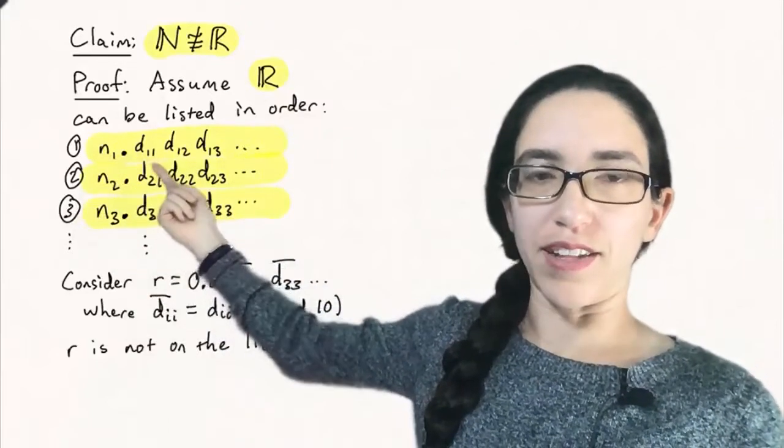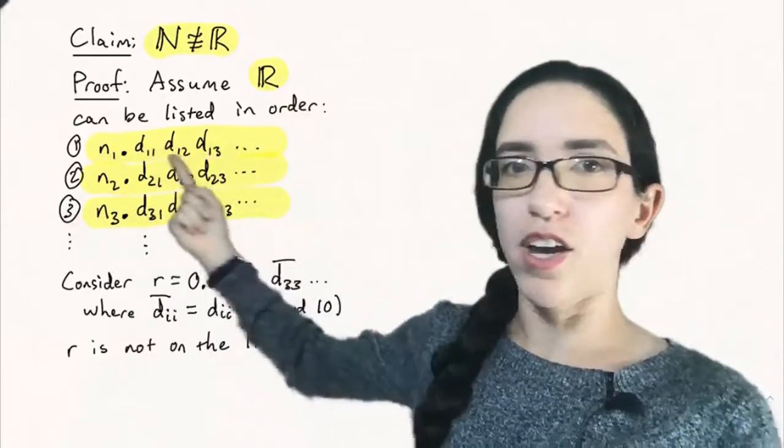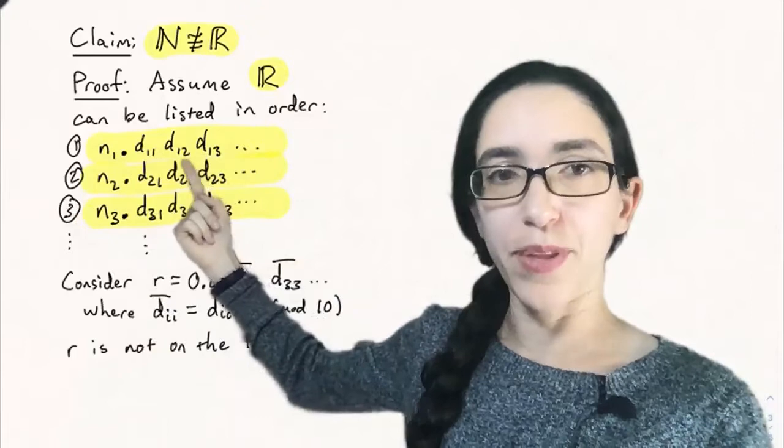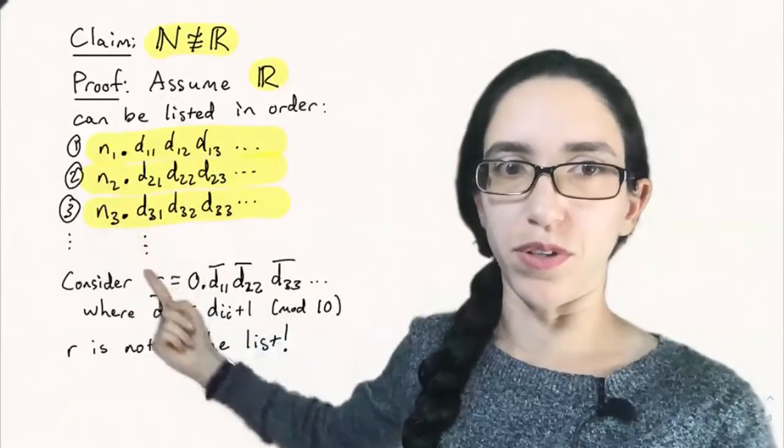n2, n3 point and this is in decimal form. So d11, d12, d13, etc. are just decimal digits between 0 and 9. So this is writing our numbers out as decimals. This is our list of numbers 1, 2, 3, 4, 5.